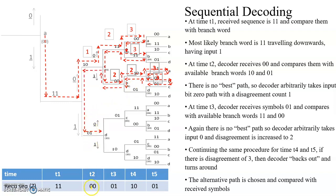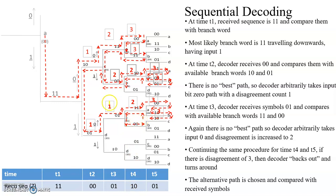We choose the lower path at T2 where 0,0 is compared with received 0,1. The disagreement is 1. The 0,1 is matching with the upward path, so we go there with disagreement count 1. Then 1,0 is compared with both paths — it is not matching, so we choose the upper path with total disagreement count 2. Going to the next step, the disagreement count reaches 3, so we turn around and move to the lower path. That also has disagreement count 3, so we turn back and choose path 1,0,0,0 with disagreement 1 plus 1, which is 2. And 0,1 is already there in the lower path, so we choose this path. The total disagreement is 2.